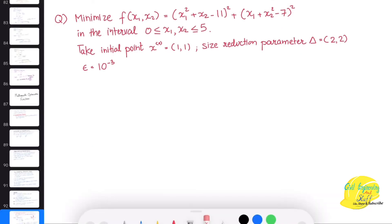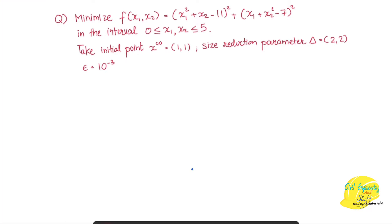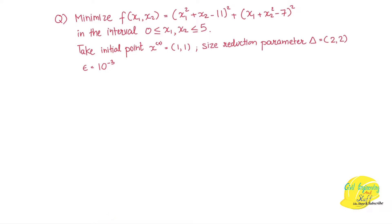Let us do a numerical example for better understanding of this optimization technique. The function is f(x1, x2) given by the equation (x1² + x2 − 11)² + (x1 + x2² − 7)², where x1 is greater than or equal to 0 and x2 is less than or equal to 5. We are given in the question that x-naught, the initial starting point, is (1, 1) and the size reduction parameter delta is (2, 2). The minimum value epsilon for termination is 10 to the power minus 3. So if the double-norm of delta is less than this value, we will terminate the program.